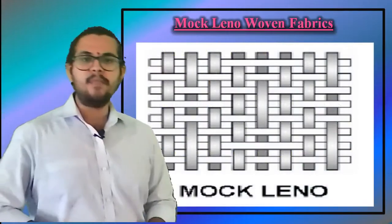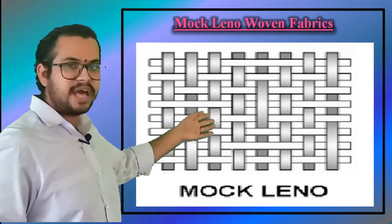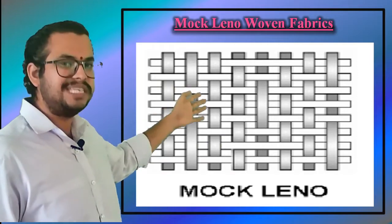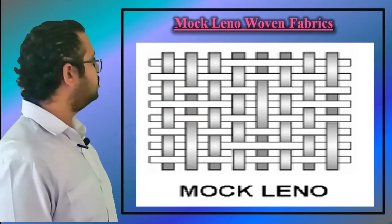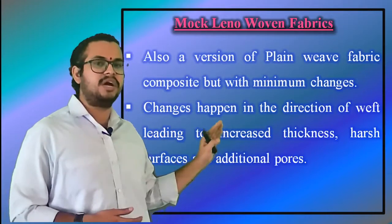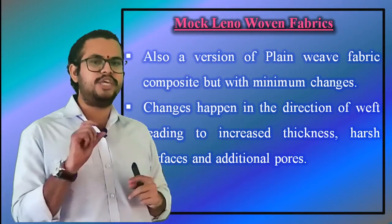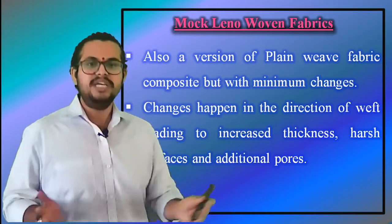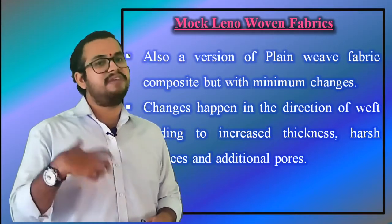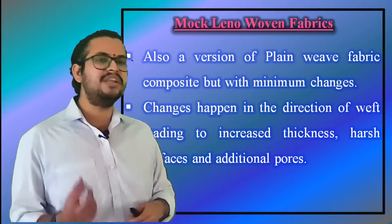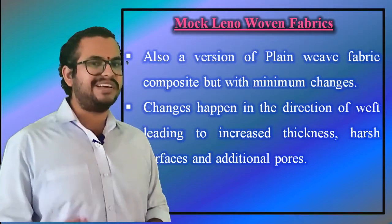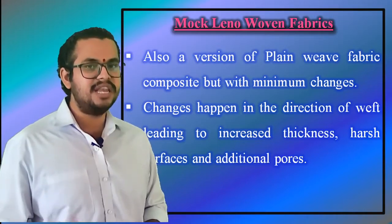Mock leno woven fabric composite. It is a version of plain weave in which occasional warp fibers at regular intervals — but usually several fibers apart — deviate from the alternate under-over interlacing and instead interlace every two or more fibers. This happens with a similar frequency in the weft direction, and the overall effect is a fabric with increased thickness, rough surface, and additional porosity.